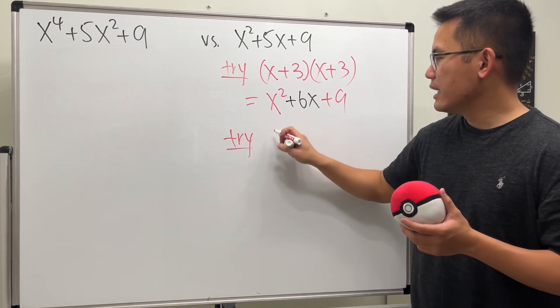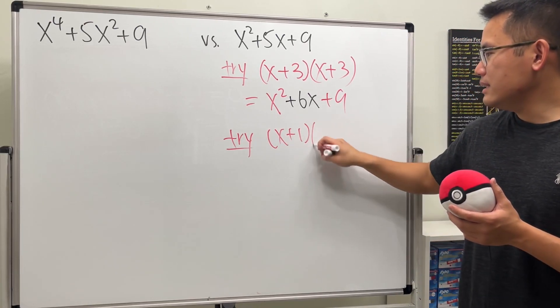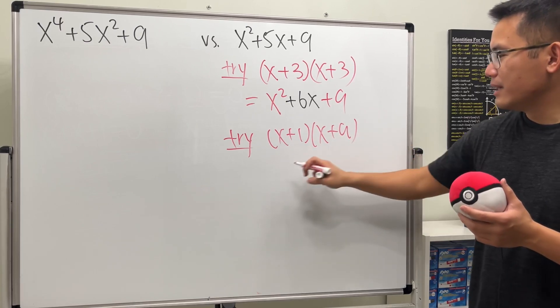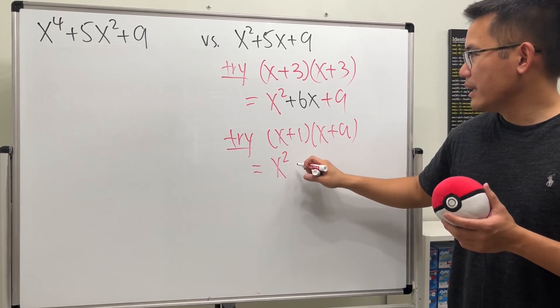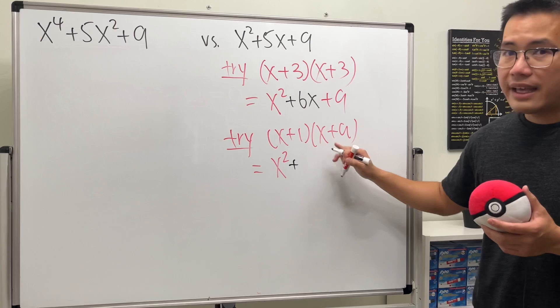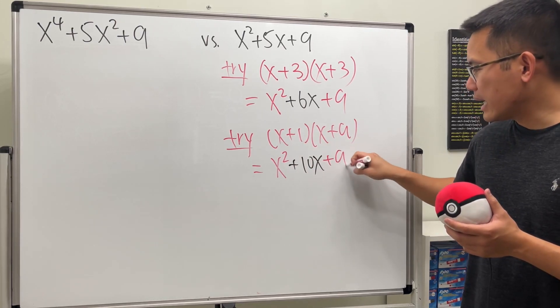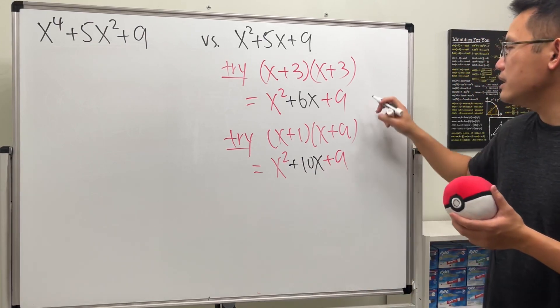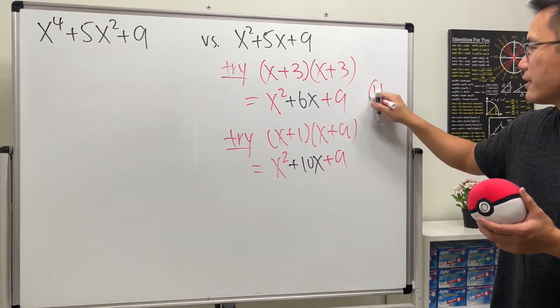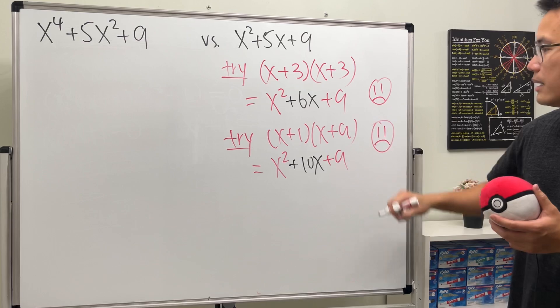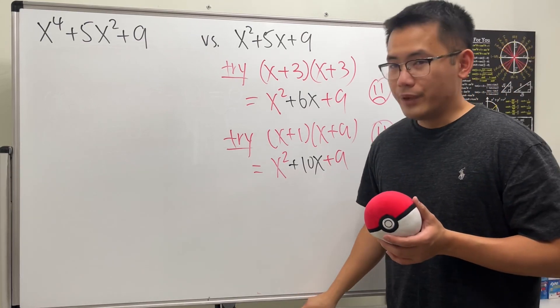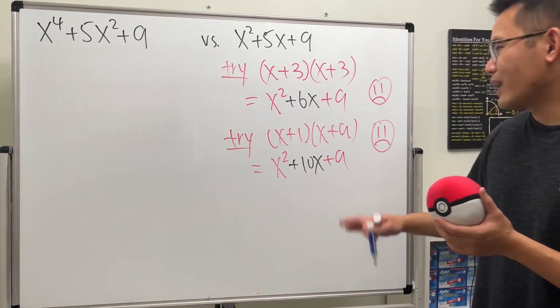And of course we can also try (x+1)(x+9), but this right here will give us x squared and then in the middle will be 9x and another x. Altogether is 10x and then plus 9. So unfortunately both of them were sad face.